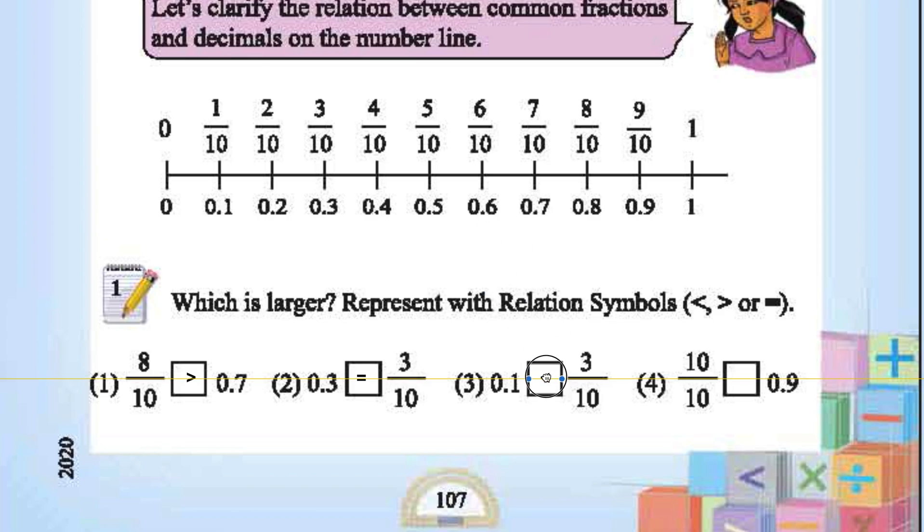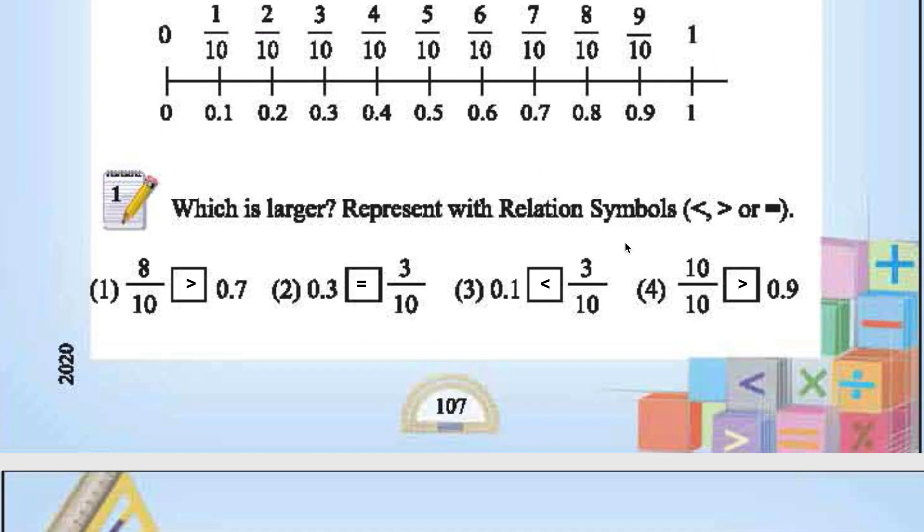10 by 10, 0.9. 10 by 10 is nothing but 1. 1 is greater than 0.9. You can refer number line as well. 10 by 10 is here. 9 by 10 or 0.9 is here. So 10 by 10 is greater than 0.9.